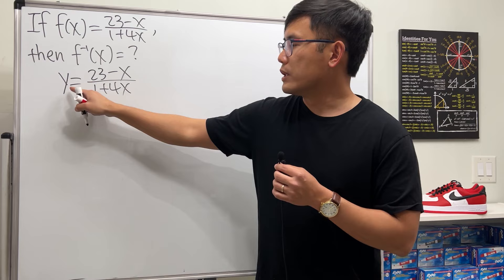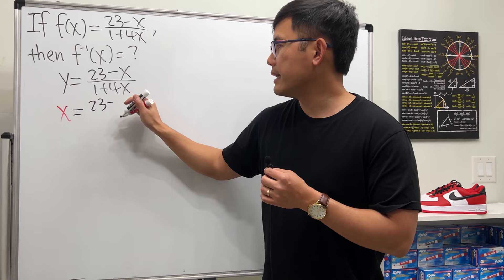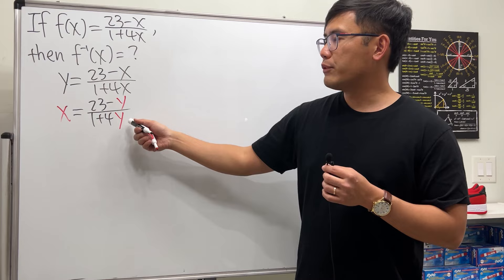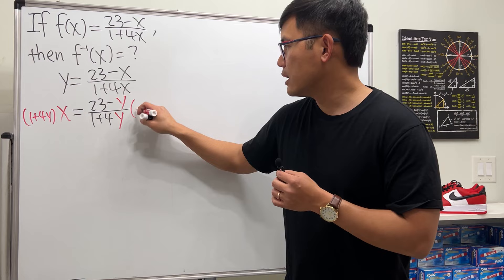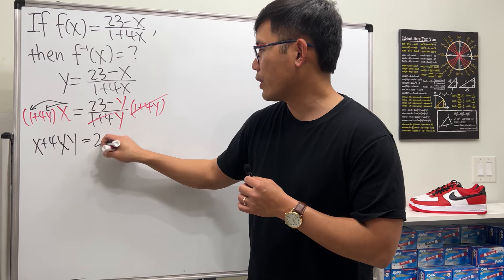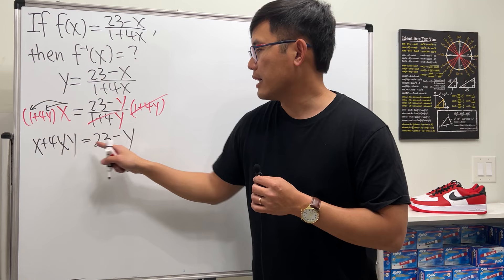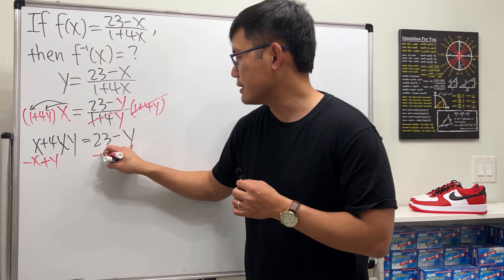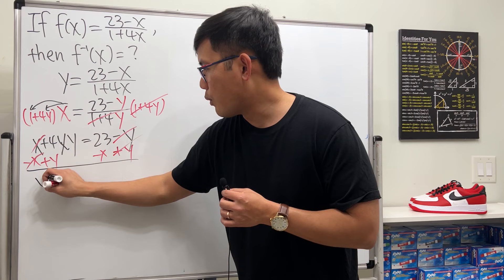Then we switch y to x and x to y, so x equals (23 minus y) over (1 plus 4y). To isolate y, we multiply both sides by (1 plus 4y) — those cancel — then distribute to get x plus 4xy equals 23 minus y. Now move the y terms to one side and the x to the other.